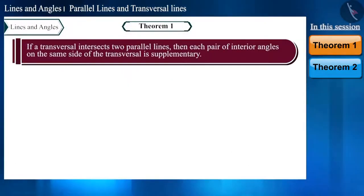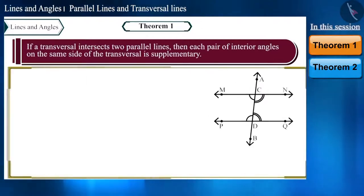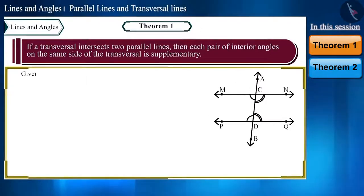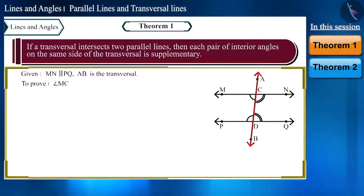Friends, we have been given that these lines, line MN and line PQ, are parallel, and we have to prove that each pair of interior angles on the same side of the transversal is supplementary.